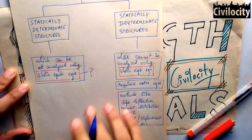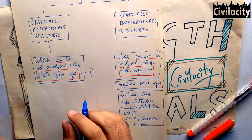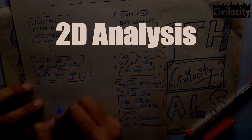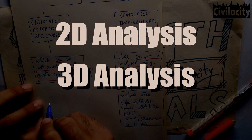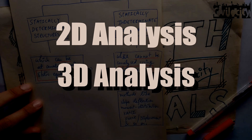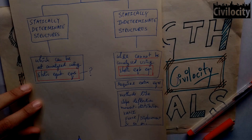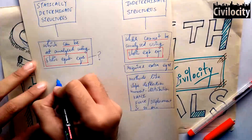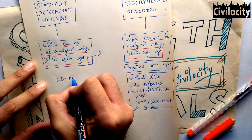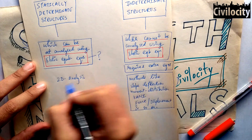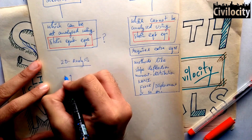There are two types of structural analysis. The first one is 2D analysis and the second one is 3D analysis. 2D analysis is what we typically do in civil engineering, and 3D analysis reflects real-life conditions. Right now we will focus on 2D analysis, which means two dimensions — one x-dimension and one y-dimension.